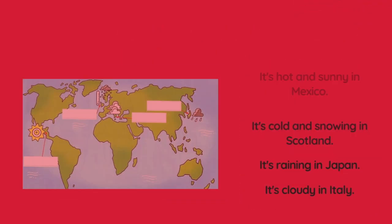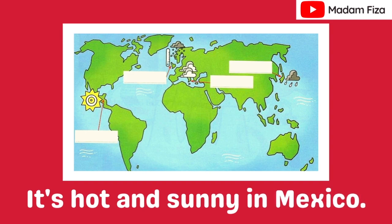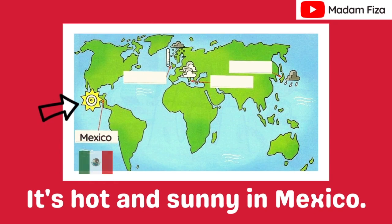The first sentence is: It's hot and sunny in Mexico. Can you spot the symbol of hot and sunny weather? Yes, that's it! So that is Mexico. It's hot and sunny in Mexico.